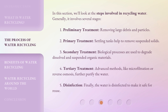In this section, we'll look at the steps involved in recycling water. Generally, it involves several stages. 1. Preliminary Treatment: removing large debris and particles. 2. Primary Treatment: settling tanks help to remove suspended solids.